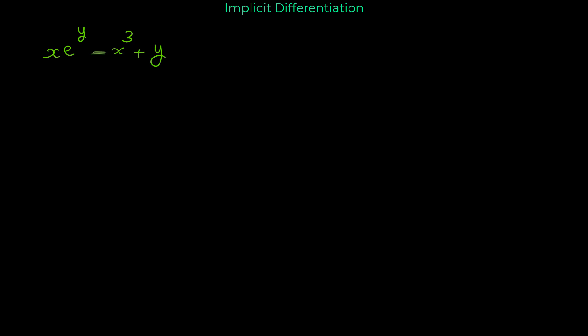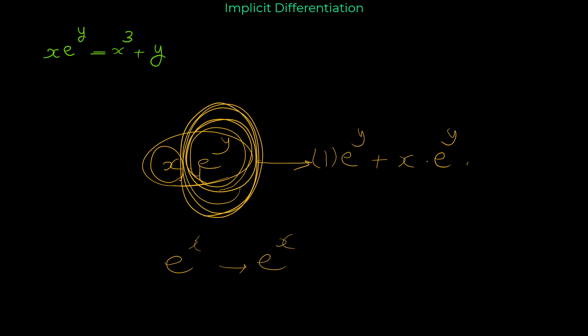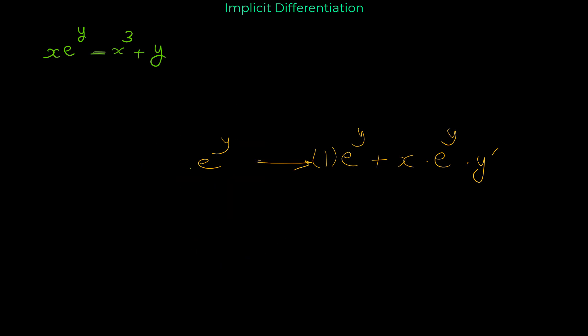Now let me show you another example. We want to find dy/dx for x·e^y = x³ + y. We differentiate both sides with respect to x. For the derivative of x·e^y, we use the product rule because we have two terms. The derivative of x is 1, times e^y, plus x times the derivative of e^y. The derivative of e^x is e^x, so the derivative of e^y is e^y, but because this is a term involving y, multiply by y prime. So the left side gives e^y + x·e^y·y′.